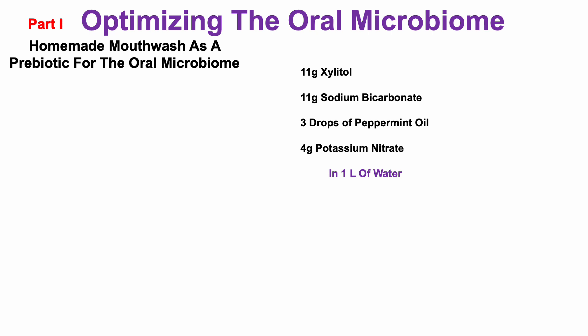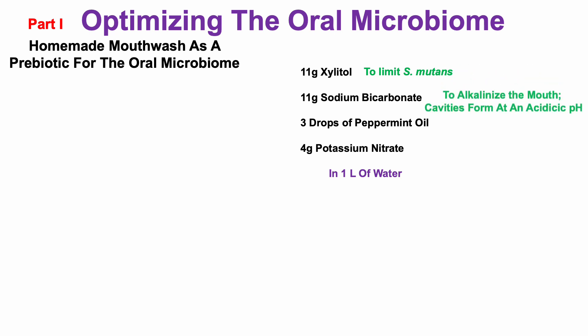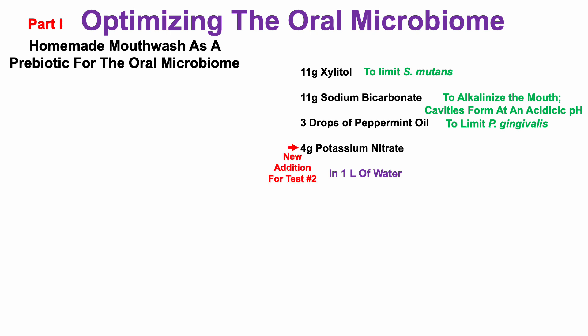Why are each of these components there? Xylitol has been shown to inhibit the growth of Streptococcus mutans, or S. mutans, a bacterium related to cavity formation. Sodium bicarbonate alkalinizes the mouth — note that cavities form at an acidic pH — so bicarbonate would be expected to remove acid from the mouth. Peppermint oil has been shown to limit growth of P. gingivalis.